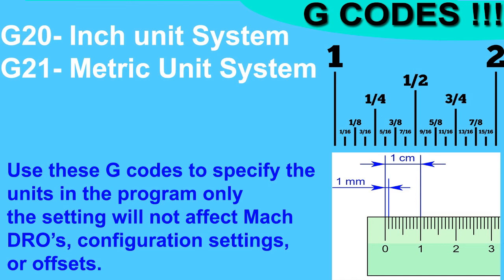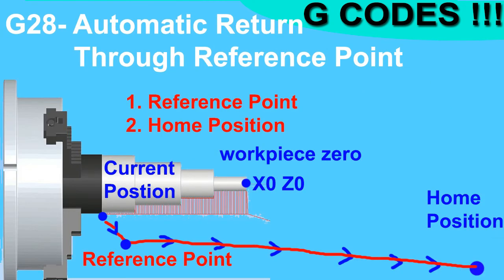G20 and G21 are used for selecting the inch system and the metric system. G20 is used if you want to program in inch units and G21 for metric units (millimeters). In countries like America, the inch system is mostly used, while in India the metric system is used. G20 and G21 are written at the start of the program to let the CNC know which unit system is being used.